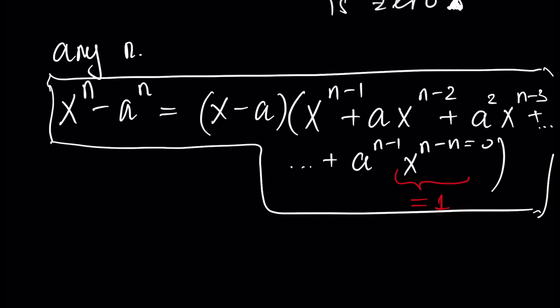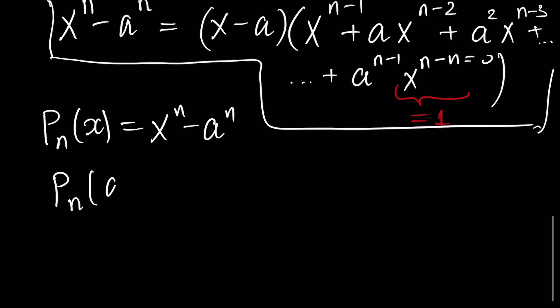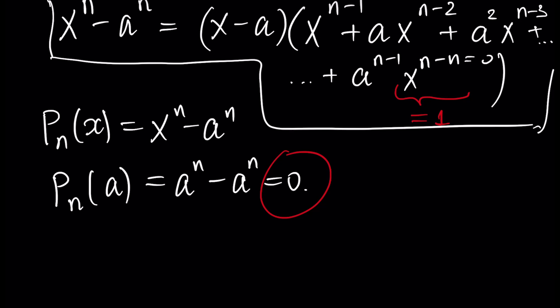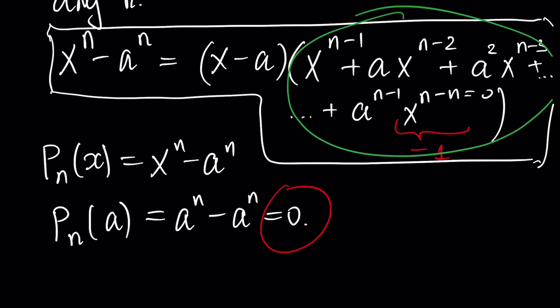To prove this formula for any n using the same method, we use Bezout's theorem: our polynomial p_n(x) equals x to the n minus a to the n. When we insert a in place of x, we get p_n(a) equals a to the power n minus a to the power n, which is zero. Since the remainder is zero, x to the n minus a to the n is divisible by x minus a, and the result for any n can be found using manual division.